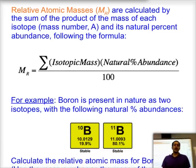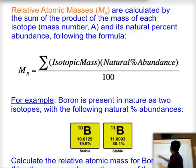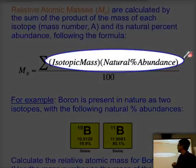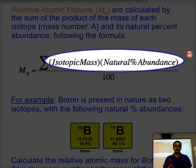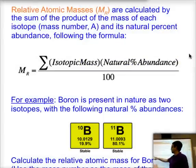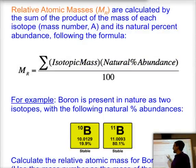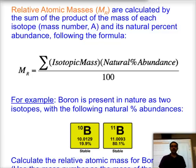The relative atomic mass is calculated as the sum of each isotope's mass number multiplied by its natural percent abundance. Once you add all of those products together, you divide by 100 to get the relative atomic mass.